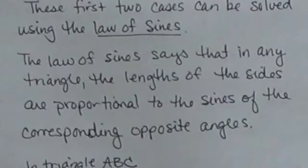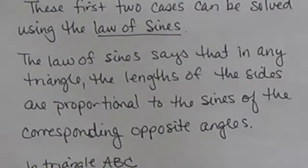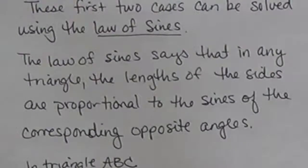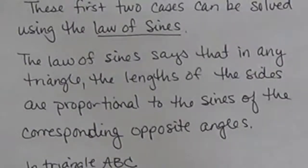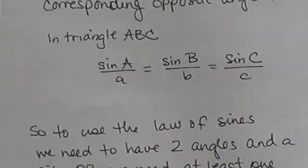These first two cases can be solved by the law of sines. So if we know an angle, a side, and an angle; or a side, an angle, and an angle; or a side, a side, and an angle opposite one of the sides, then we can use the law of sines. The law of sines states that in any triangle, the lengths of the sides are proportional to the sines of the corresponding opposite angles. For triangle ABC: sine of A over a equals sine of B over b, which equals sine of C over c.